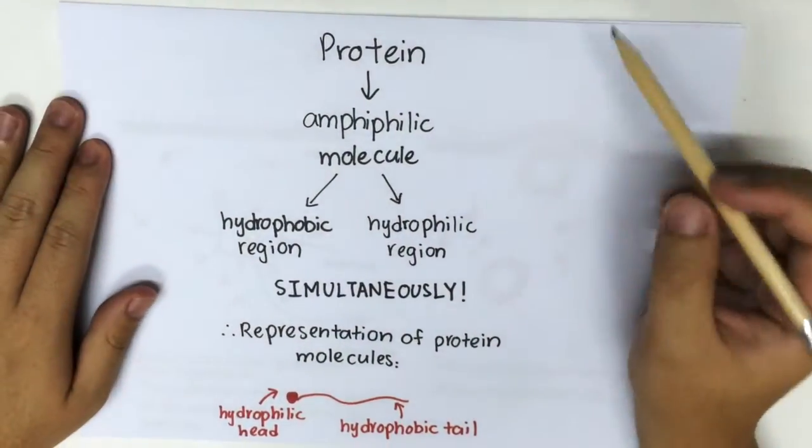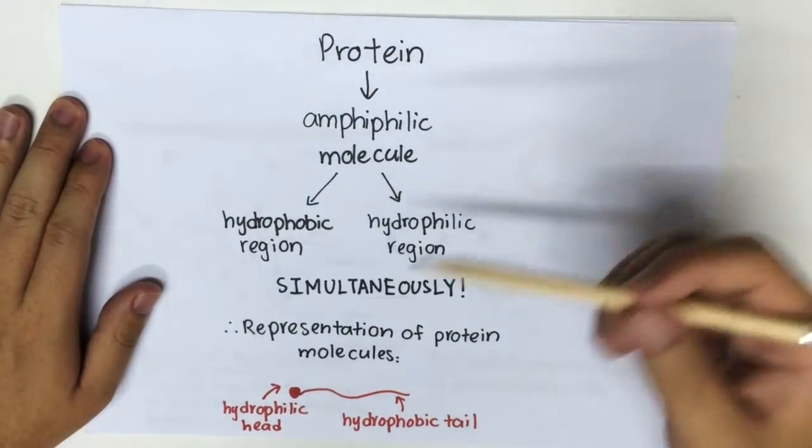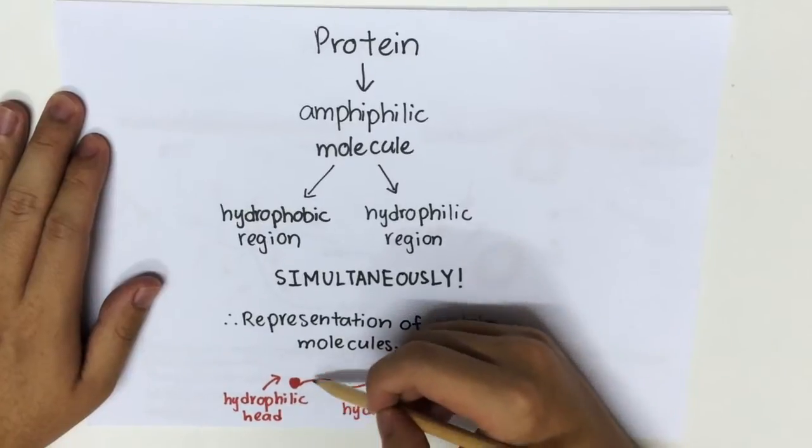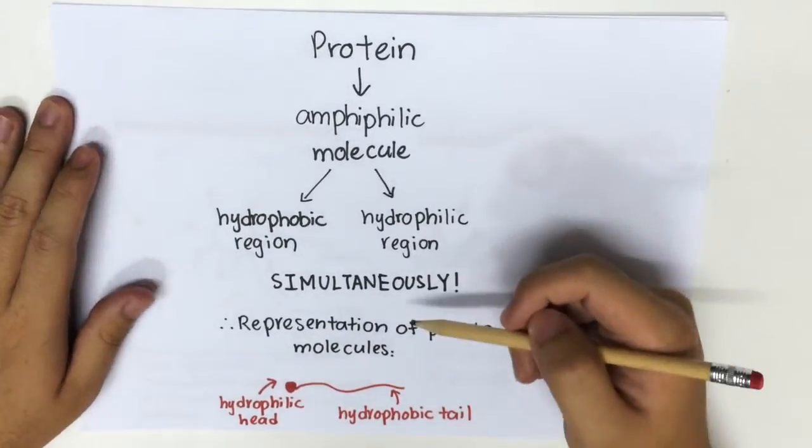Protein molecules are actually amphiphilic molecules, also known as surface active molecules. Here is an example of an amphiphilic molecule which has a hydrophilic region which loves water and a hydrophobic region which hates water.